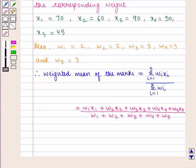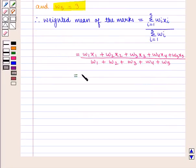Now we have the values of x1, x2, x3, x4, x5 also w1, w2, w3, w4 and w5. And substituting all these values we get